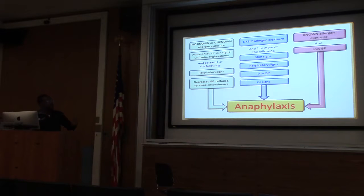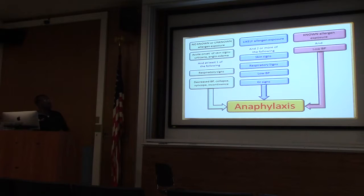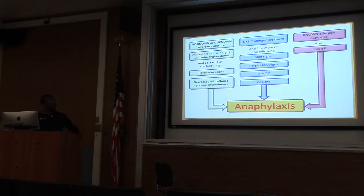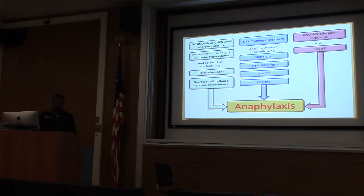If you think there's an unlikely allergen exposure and they have two of those symptoms — either skin symptoms, respiratory symptoms, or any of those — they also qualify as anaphylaxis. If this person has a known allergen exposure and they tell you this has happened before and they come in with maybe a little rash and low blood pressure, that automatically qualifies as anaphylaxis.